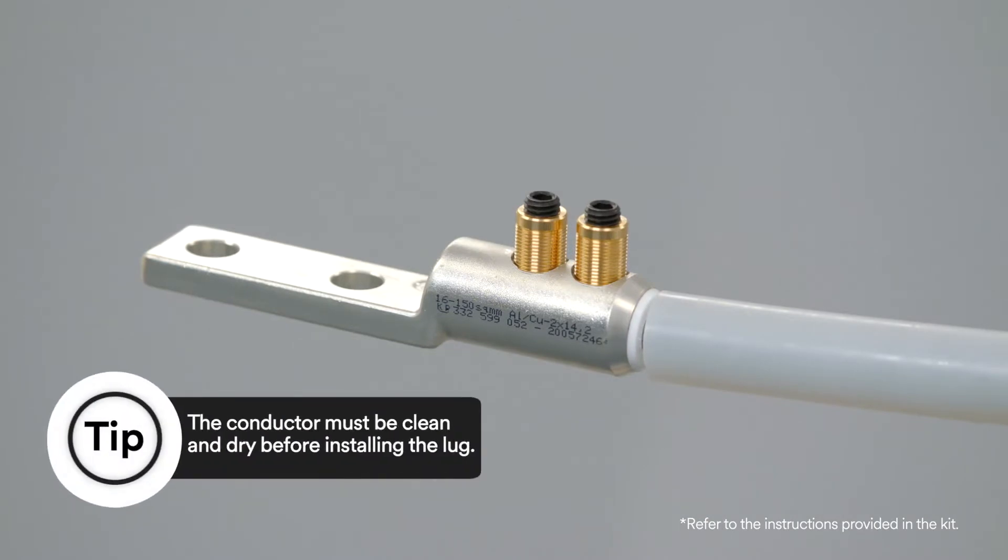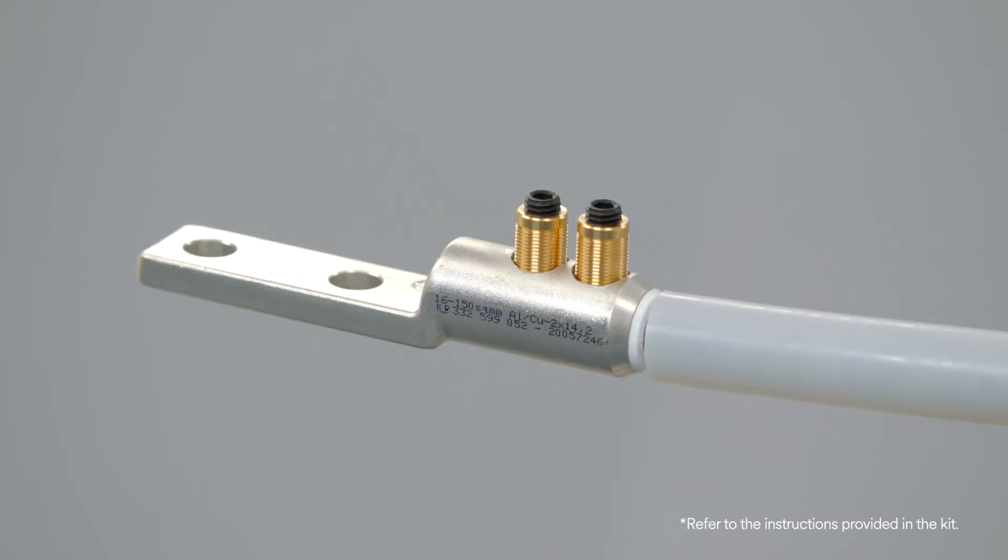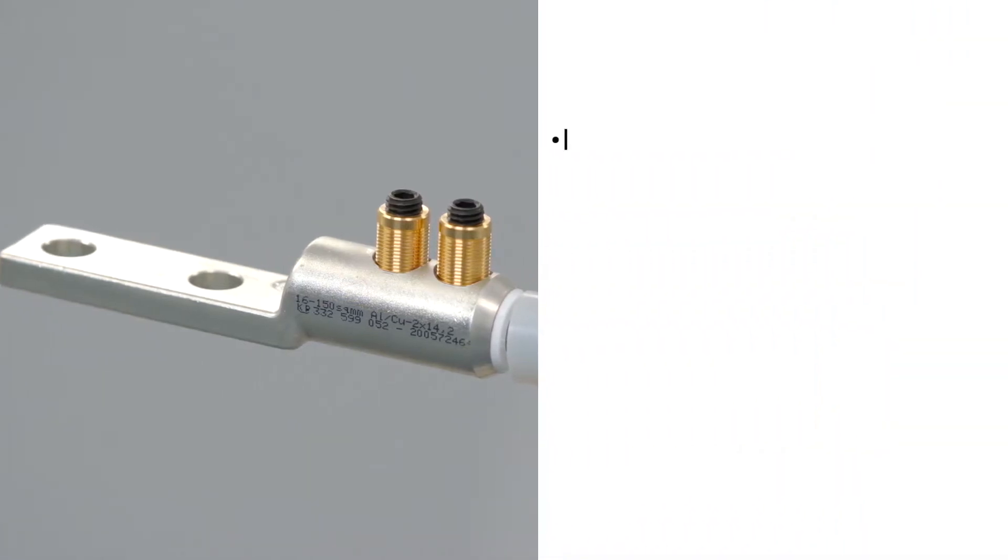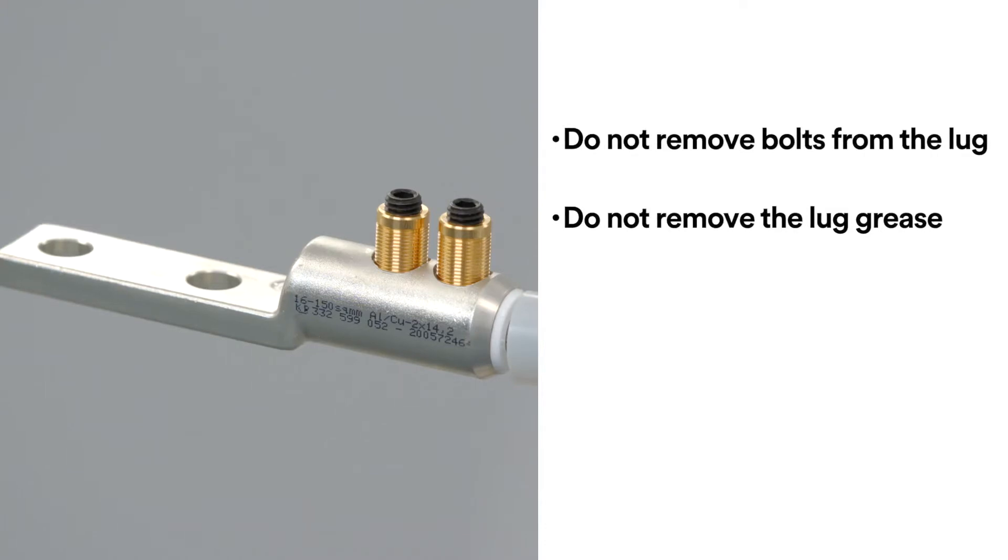For this video, we will be using the 3M Mechanical Sheer Bowl 2-hole lug QL2 series. When installing the lug, there are a few things you must remember. First, do not remove bolts from the lug and do not remove the lug grease as it is pre-greased for the installation.